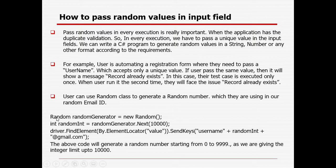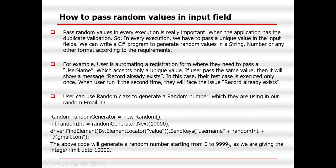Here you can see that we will be creating an object for the Random class. After that we are converting it to the relevant type — either integer, byte, or double. And here we are giving 10,000 as the parameter, which means whatever number is generated will be within the range of 0 to 9,999. The value should be 0 to less than 10,000 — it can be 5, 1,000, or 8,000. But it should not go below 0 or exceed 9,999.